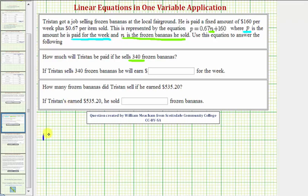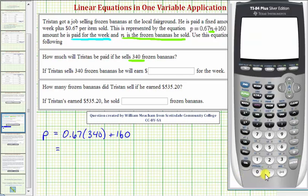We'd have P = 0.67 times N, which is 340, plus 160. Let's go ahead and evaluate this on the calculator. We have 0.67 times 340 plus 160, which is equal to 387.8.